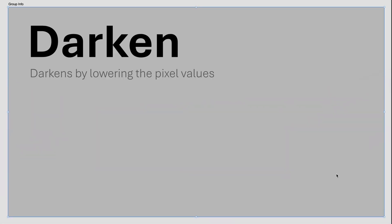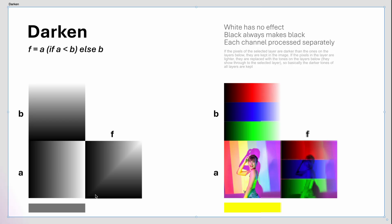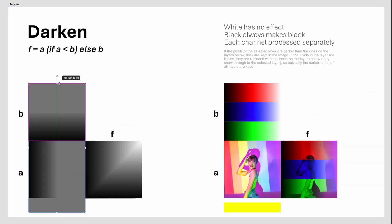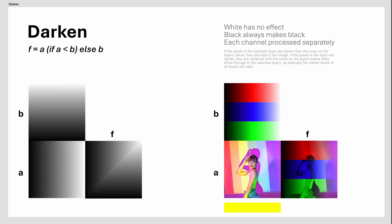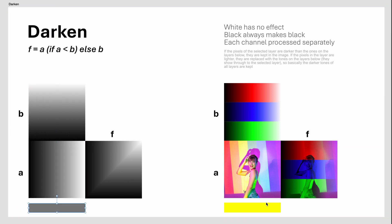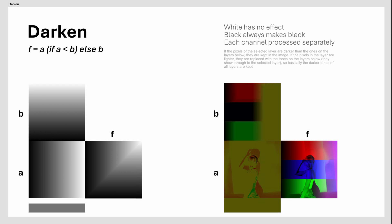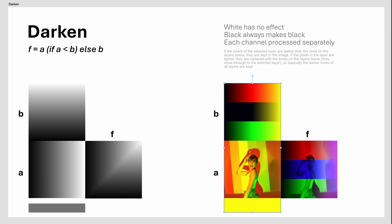The Darken group. The Blend Modes in this group darken the image by either keeping the darker pixels or by decreasing the pixel values. The Darken Blend Mode: for each pixel, the darker channel will be used from the active or underlying layer. The result is that only the darker pixels from either the active layer or the underlying layers are visible, creating a composite image where only the darkest values are retained. Can be used for shadow enhancement or adding texture.